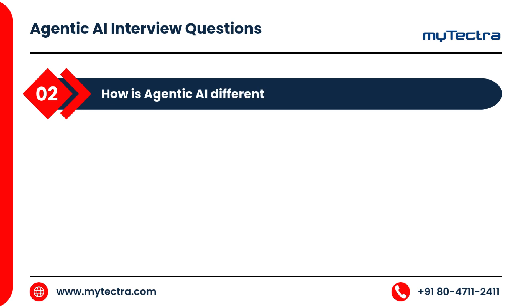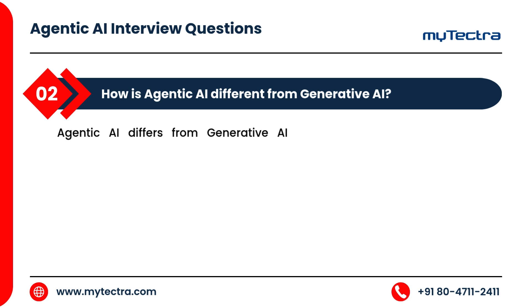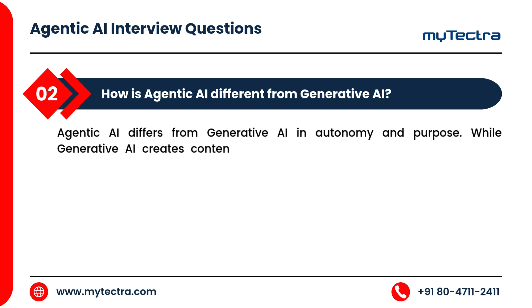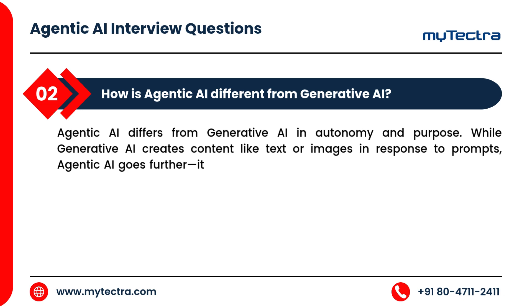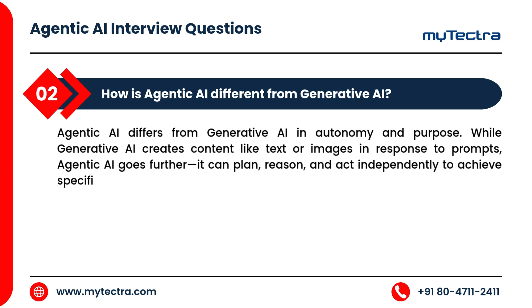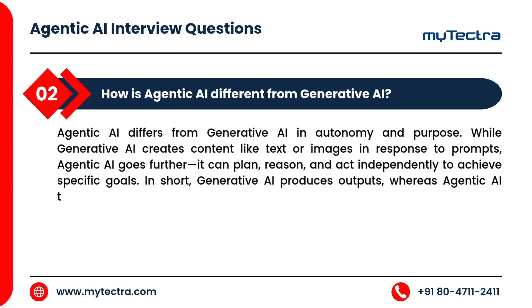How is agentic AI different from generative AI? Agentic AI differs from generative AI in autonomy and purpose. While generative AI creates content like text or images in response to prompts, agentic AI goes further — it can plan, reason, and act independently to achieve specific goals. In short, generative AI produces outputs, whereas agentic AI takes proactive steps to accomplish outcomes.